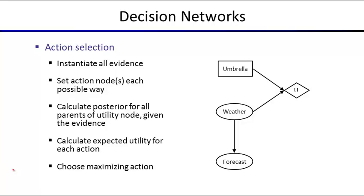So how does this work? You're supposed to pick an action. You instantiate all the evidence — whatever you get to observe. If you get to see the forecast, then you observe that variable. Then you set your action variable to each possible value, calculate the posterior for the parent variables of the utility node, and compute the expected utility by computing a weighted sum according to the probability of each outcome, where utility is based on your particular action value. After you've done that for all actions, you pick the action that maximizes the expected utility.